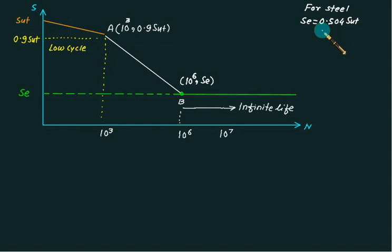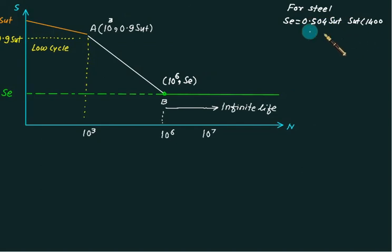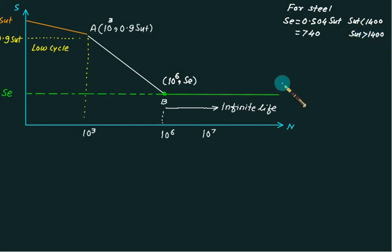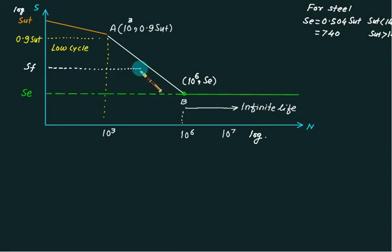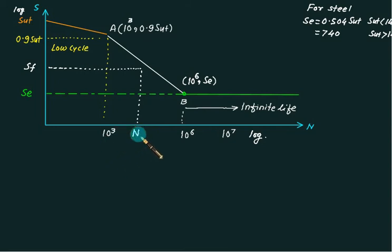If SUT exceeds 1400 MPa, SE is kept constant at 740 MPa. For any fatigue stress SF, you can find out the life of the component — how many cycles it will survive — provided the point lies between A and B, meaning SF is greater than SE and less than 0.9 × SUT.